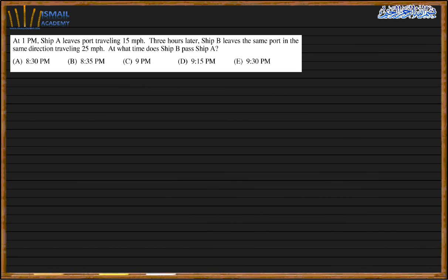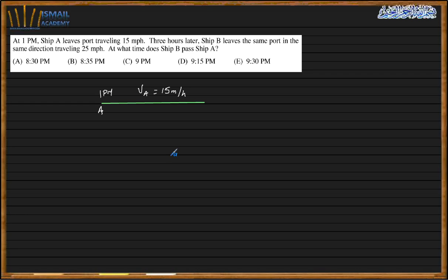At 1:15 PM — so this is 1 PM. Ship A leaves the port traveling at a velocity of 50 miles per hour. Three hours later, since velocity equals distance over time, the distance equals time times velocity. After three hours, ship A has traveled 150 miles — wait, 15 miles per hour times 3 gives 45 miles.